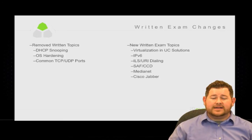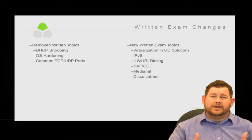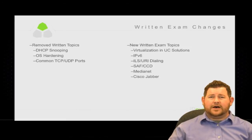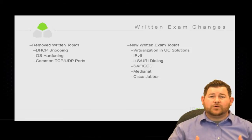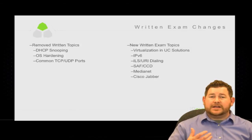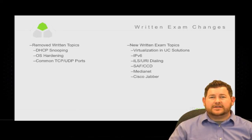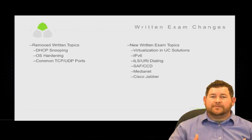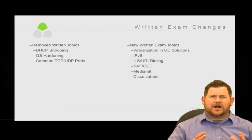The next topic is ILS and URI dialing — a new feature in Communications Manager that allows you to use a string like an email address to call someone. There are a lot of different configurations associated with that which we'll get into as we go further into the track. SAF and CCD — call control discovery — is basically built on top of the Service Advertisement Framework, almost like a routing protocol. You're exchanging dial plan information in this new method. Next is Medianet and Cisco Jabber — your soft phone and instant messenger client that can integrate with Unity Connection and support video options as well.